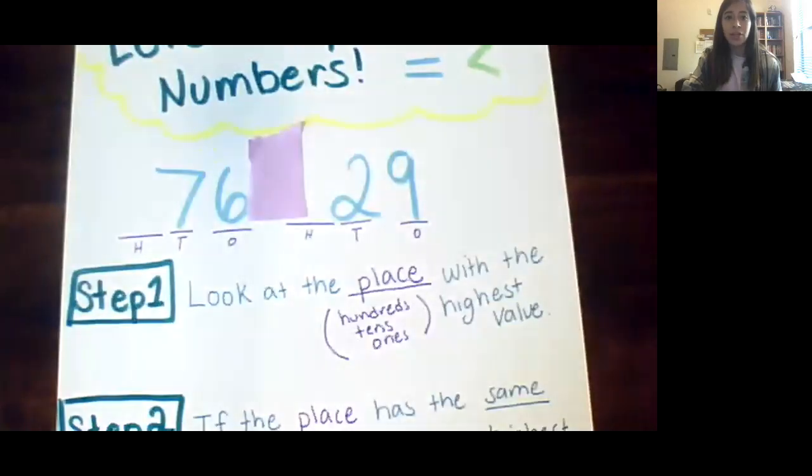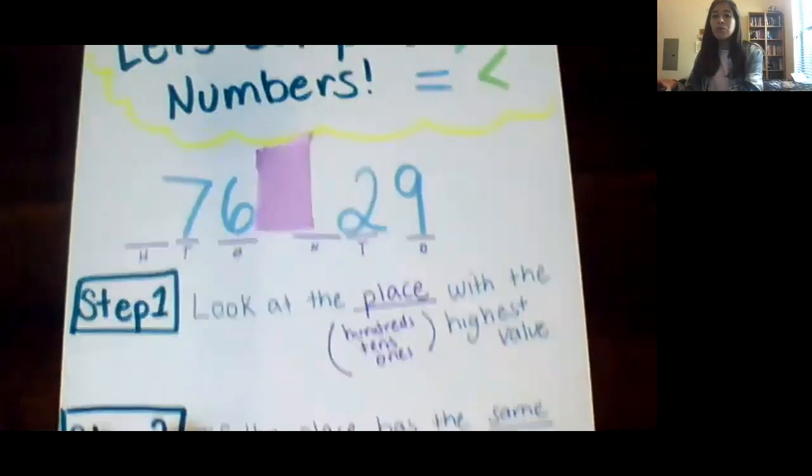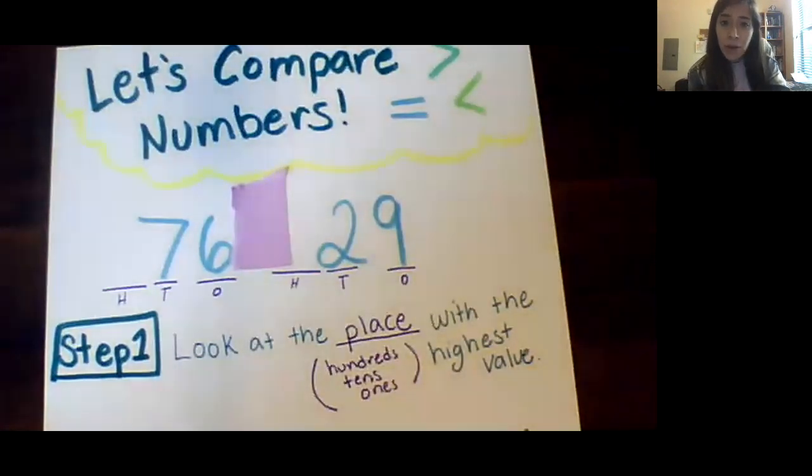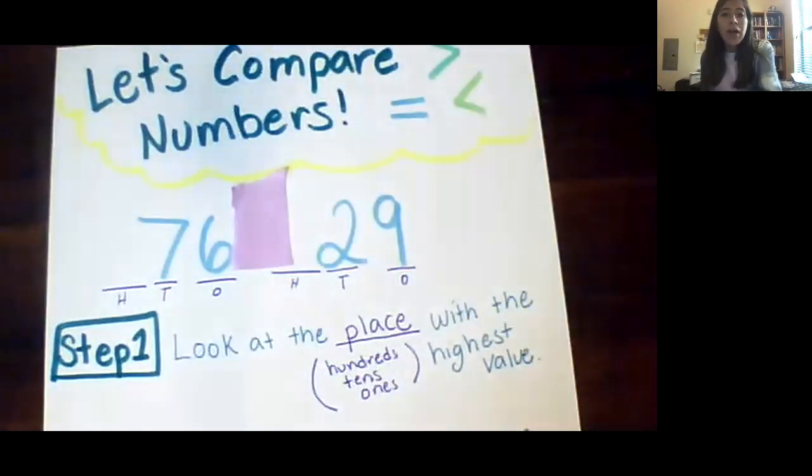Today we're going to be looking at comparing numbers. Now we're in second grade which means that we're looking at two and three digit numbers. So things can get really tricky really fast. Luckily we have three steps to make it a whole lot easier to compare some numbers.